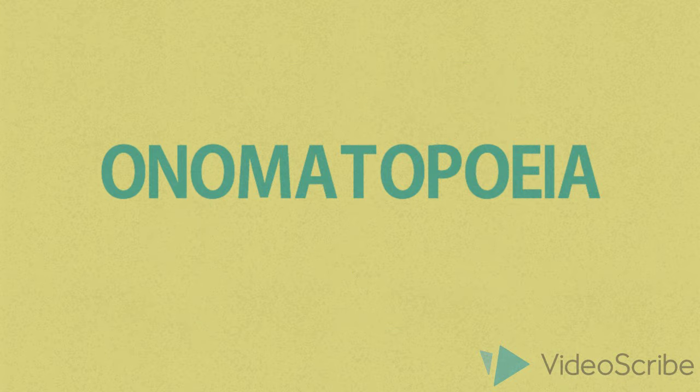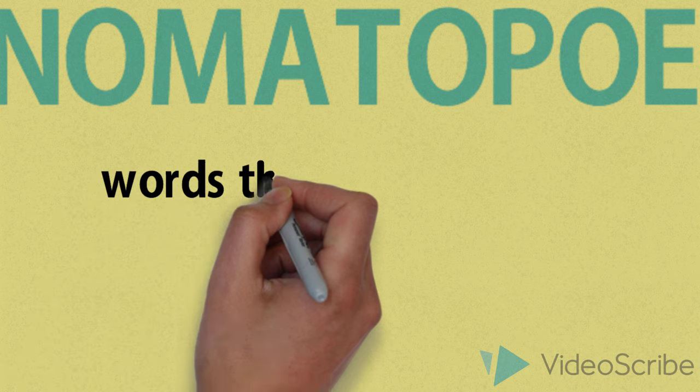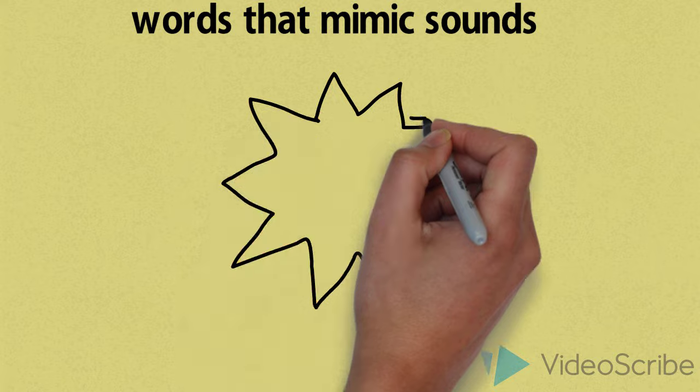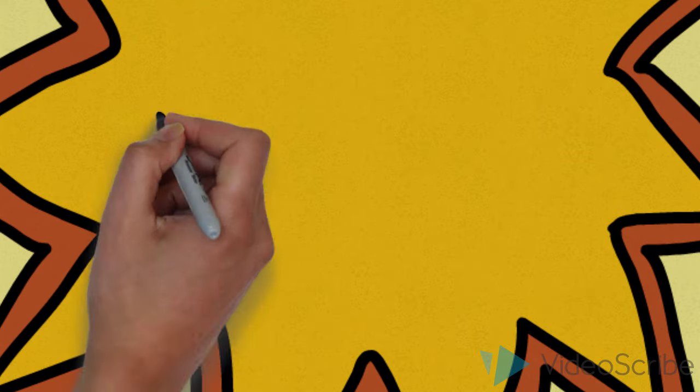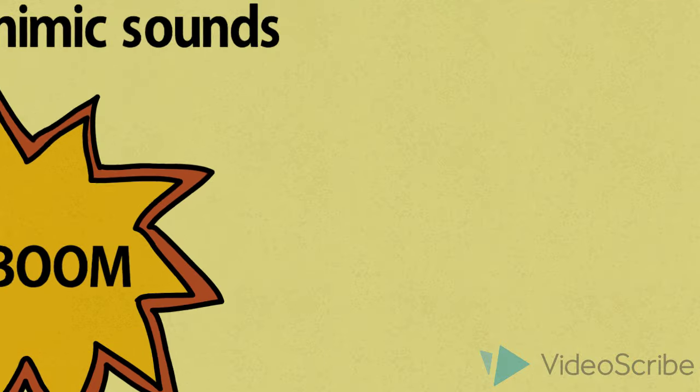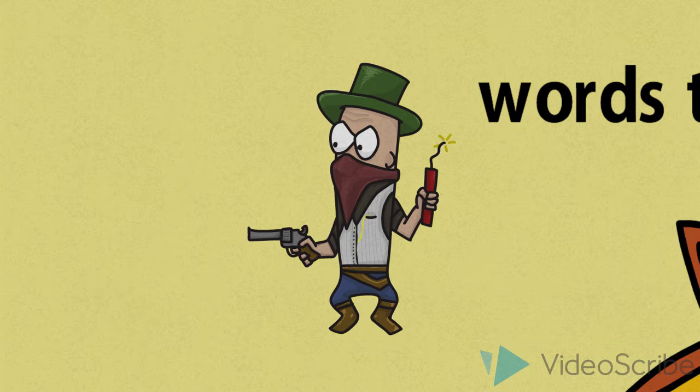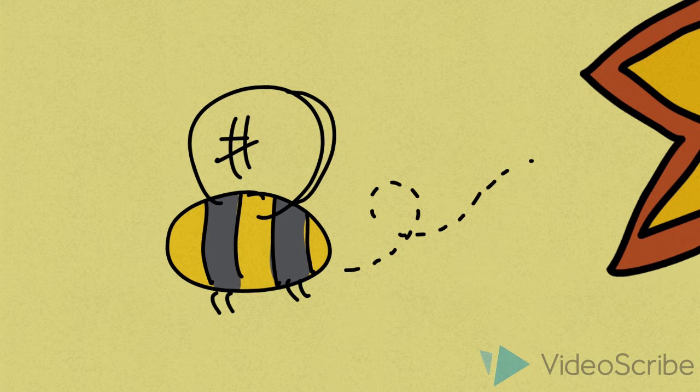Onomatopoeia. Use of words that mimic sounds. So the firecracker made a loud kaboom. Kaboom would be the onomatopoeia. Or words like slam. Bang. Buzz. That kind of thing.